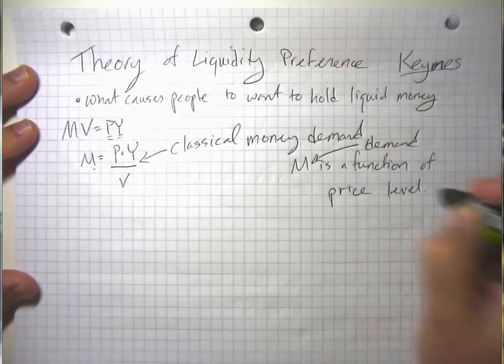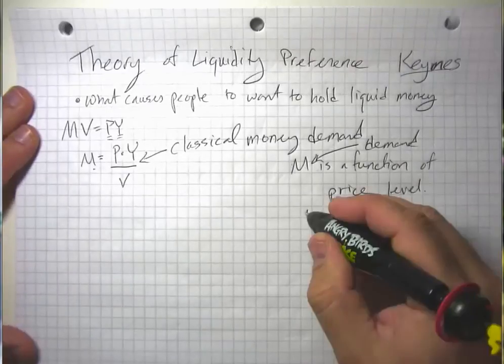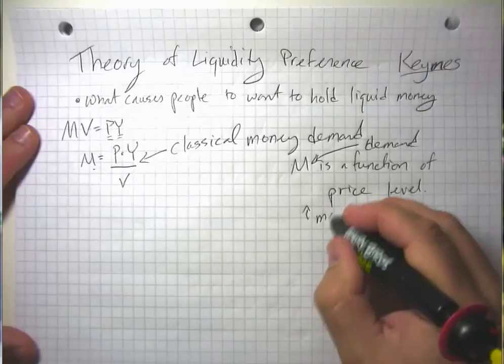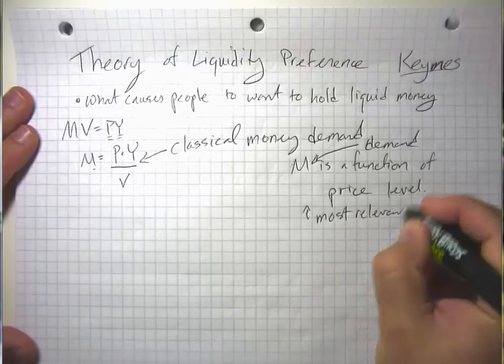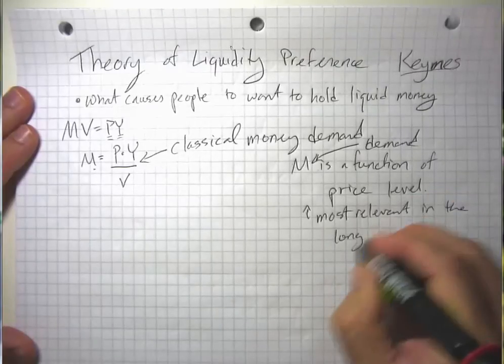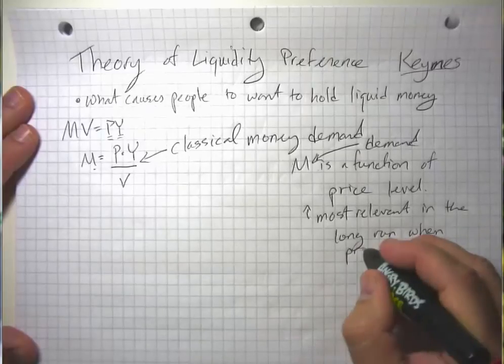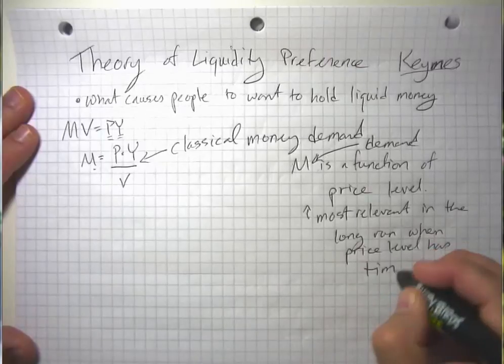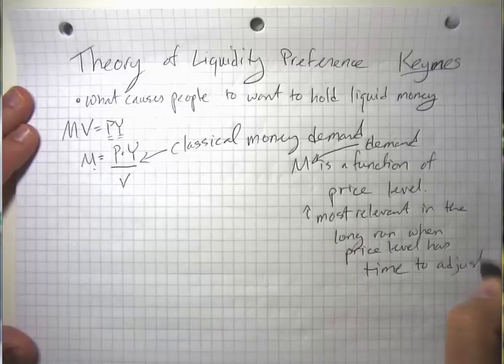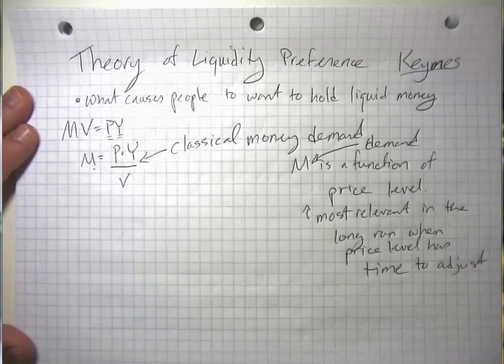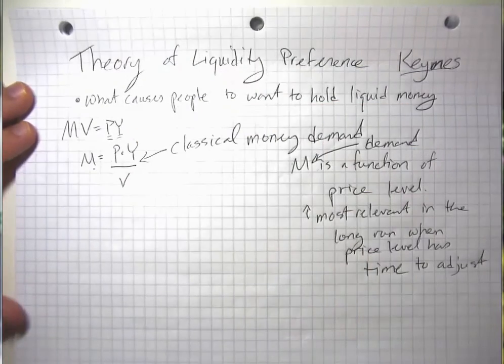Now we think that that's probably true and important, and we think that this is probably especially true and most relevant in the long run, when the price level has time to adjust. But the whole thing about short-run macroeconomics is that the price level doesn't have time to adjust. So money supply and money demand aren't going to be able to come into balance as a result of the price level.